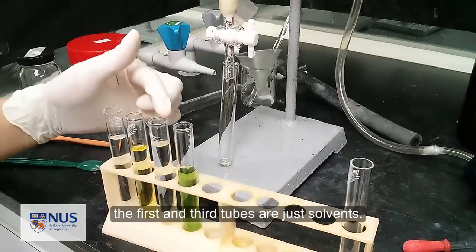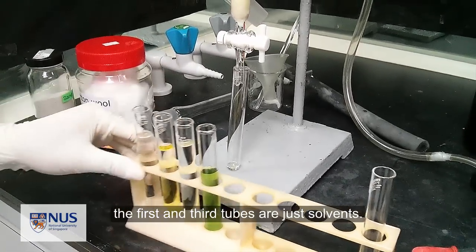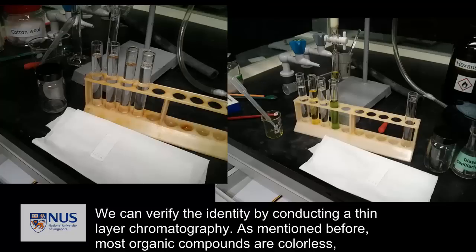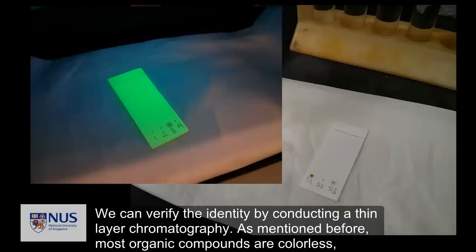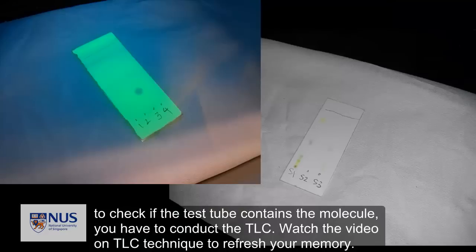The first and the third test tubes are just solvents. We can verify the identity by conducting a thin layer chromatography. As mentioned before, most organic compounds are colorless, so to check if the test tube contains the molecule, you have to conduct the TLC. Watch the video on TLC technique to refresh your memory.